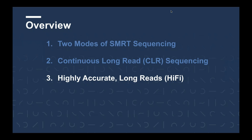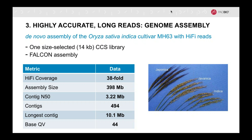Now let's turn to applications using the HiFi data type. Like CLR data, HiFi reads can also be used for genome assembly. Here are the results for one SMRT cell of HiFi data from a 14 KB CCS library sequenced on Sequel II for the rice cultivar MH63. This one cell of HiFi data generated 40-fold coverage for the 400 megabase rice genome. The resulting assembly has high contiguity and a very high base QV of 44, translating into fewer than one error per 10 KB. The computation required for genome assembly with HiFi is much less than using CLR data.